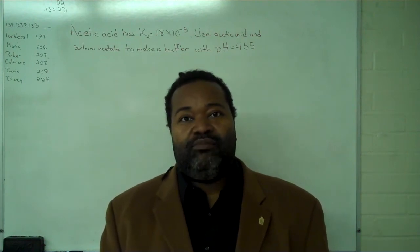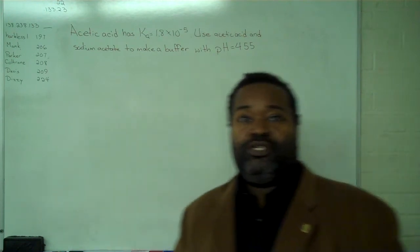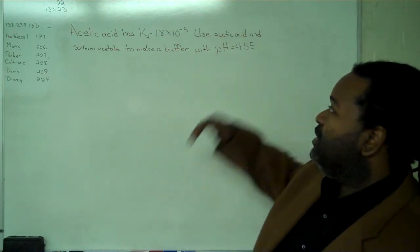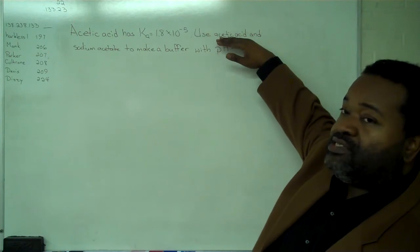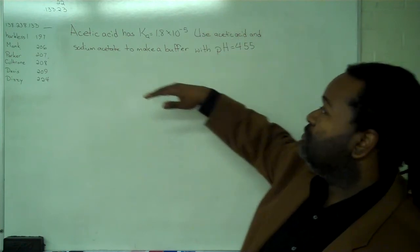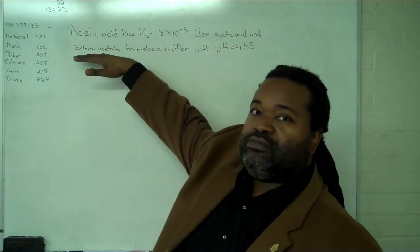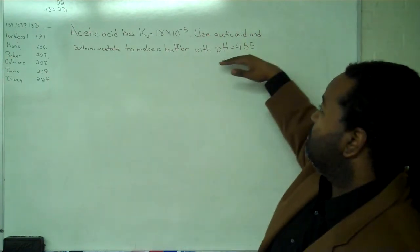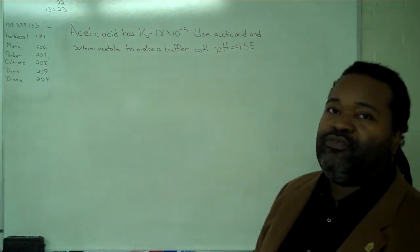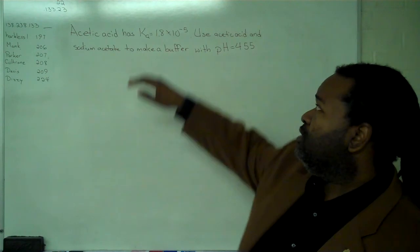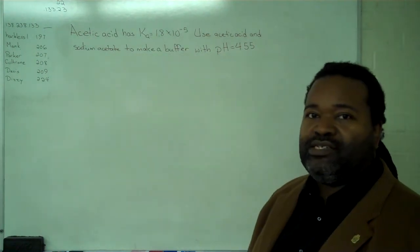To make a buffer solution with the desired pH, we'll need the identity of the undissociated acid (in this case, acetic acid), the source of the conjugate base (sodium acetate), the desired pH (4.55), and the Ka for the acid.